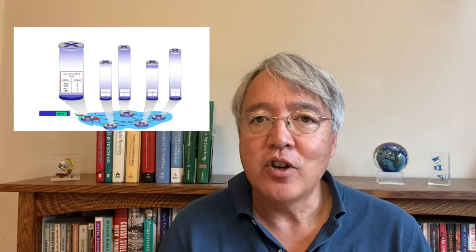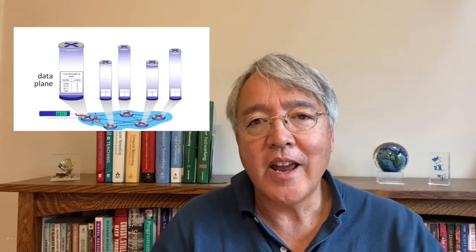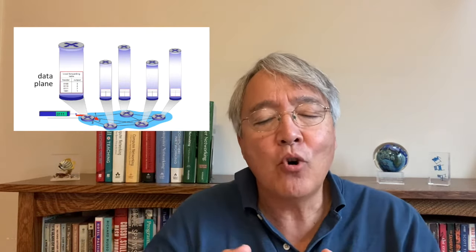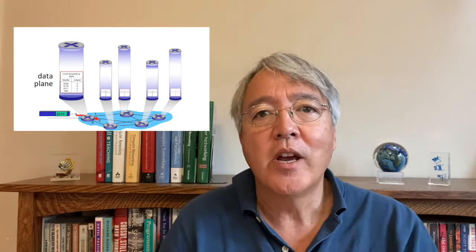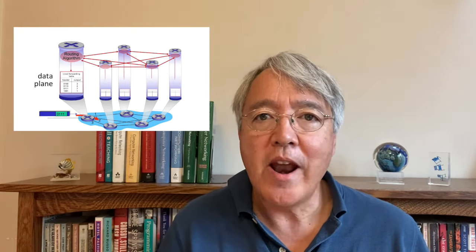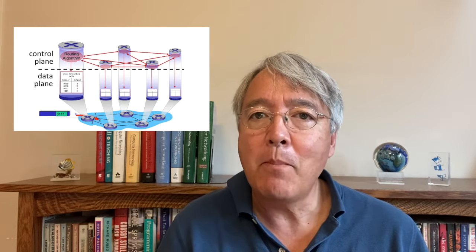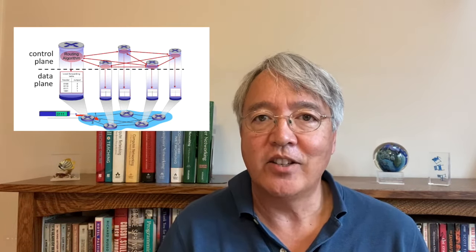We're ready to move into the control plane, chapter 5 in our textbook. We're going to be staying in the network layer but shifting our focus from the data plane, which we studied in chapter 4, into the control plane. In making this shift, we're moving from looking at individual routers — the per-router function of moving packets from input ports to output ports — to a more network-wide view, looking at problems of routing, such as how to determine paths from source to destination.